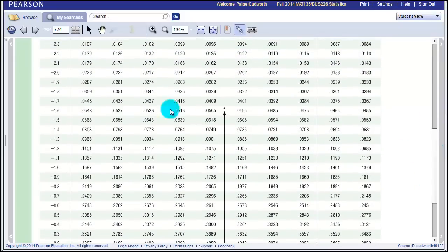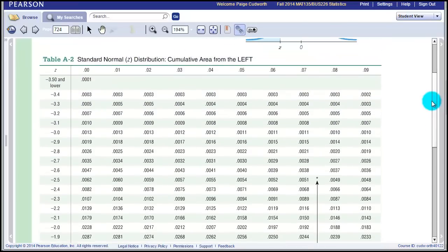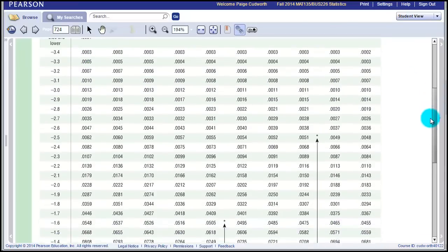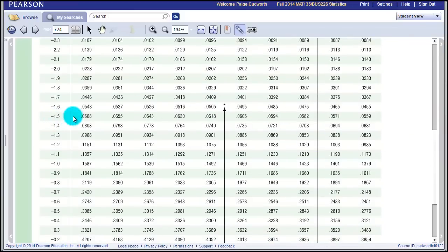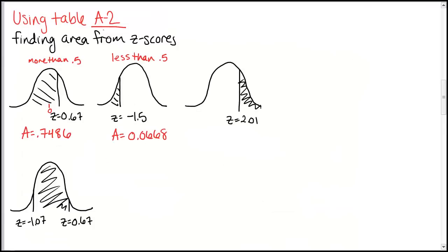Looking for negative 1.5 in the table — in this case there was no extra decimal, so I'm going to use the first column, which is really 00. A z-score of negative 1.5 gives us an area of 0.0668. This is a pretty small area. These areas represent probabilities or percentages — we could think of this as a probability of 0.07, or about 7%. There's about 7% of the data that falls below, or to the left of, a z-score of negative 1.5.